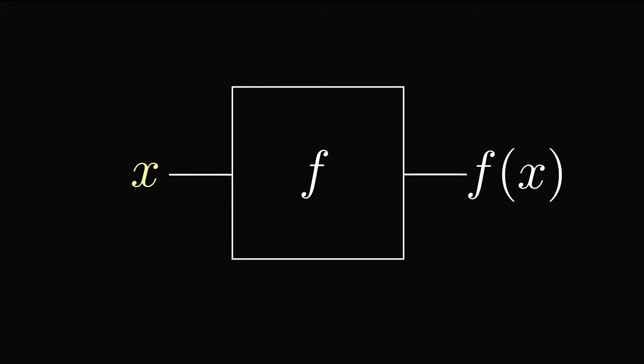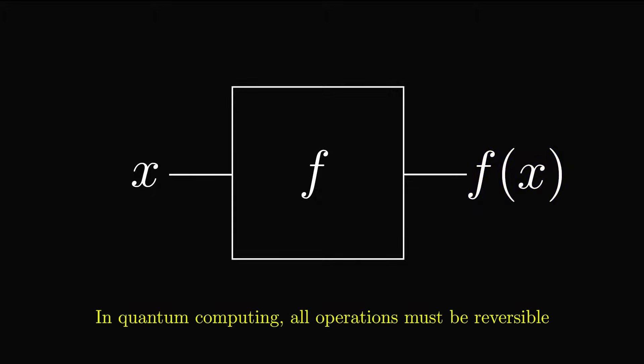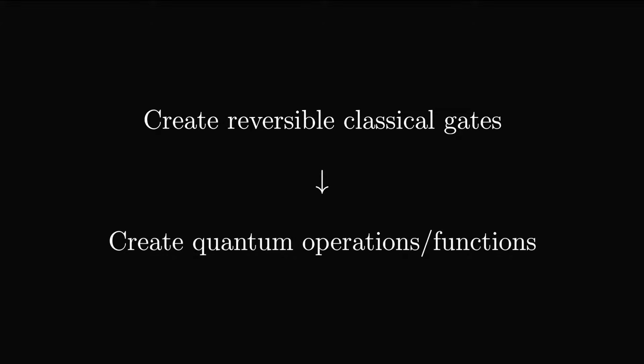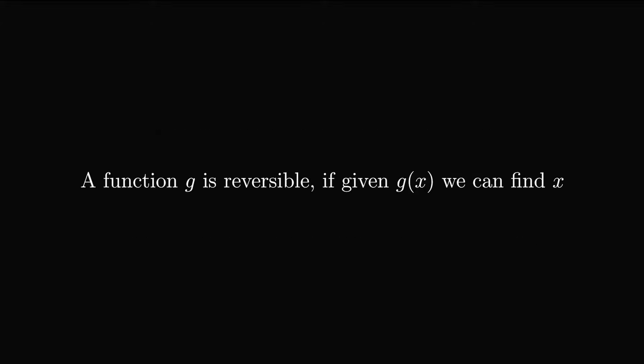We normally think of functions like this, where we input x and get some output f(x). This works fine for classical computers, but in quantum computation, all gates and operations must be reversible. To understand how we can make functions reversible, we will look at how a classical gate can be made reversible, and then use the same techniques to create our quantum function or oracle.